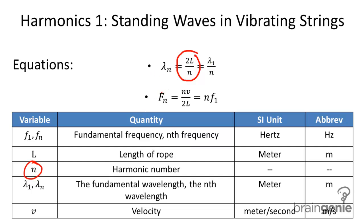For the harmonic frequency, or what we call the fundamental frequency, we use the equation f_n = nv/2L, the harmonic number times the velocity of the wave divided by two times the length.